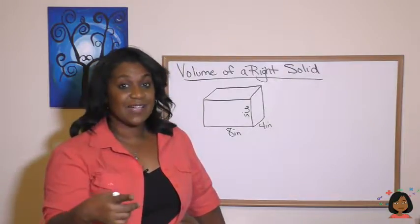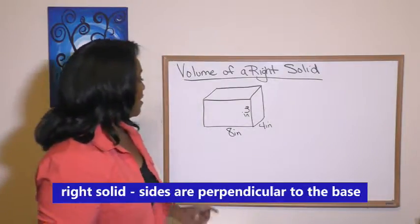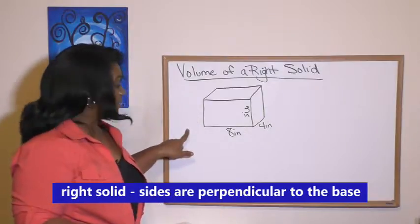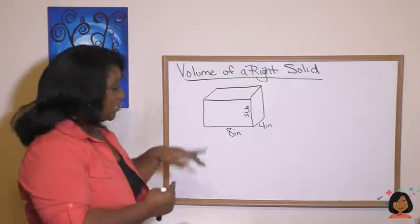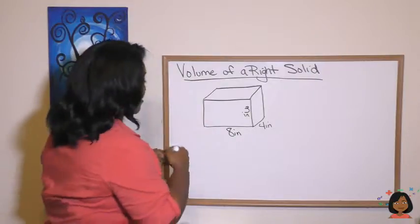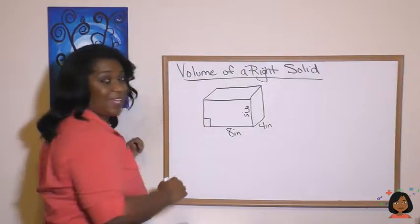What is a right solid? A right solid is any figure where the base, that'd be here, the base and the height are perpendicular. They're forming a right angle as it does in this rectangular prism.